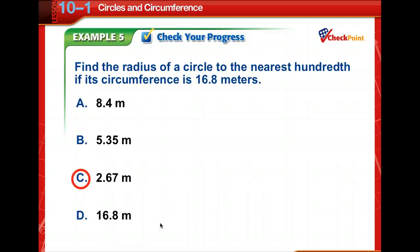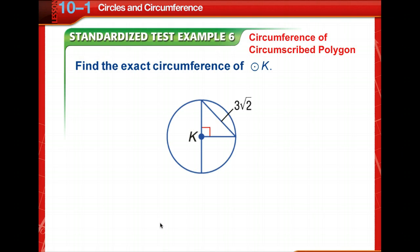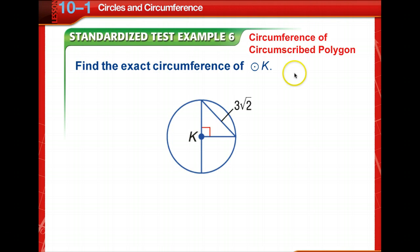Again, use the pi button on your calculator. A polygon is inscribed in a circle if all of its vertices lie on the circle. A circle is circumscribed about a polygon if it contains all the vertices of the polygon. Notice the end of the circle does not touch the end of the triangle — so the circle is circumscribed about the polygon, not inscribed.